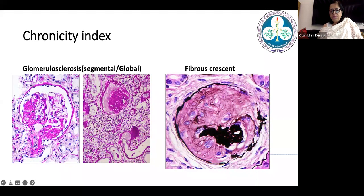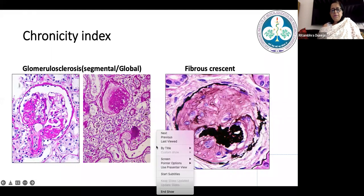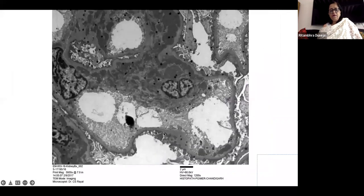Healed lesions — scarred necrosis and fibrous crescents — are taken as part of chronicity. A fibrous crescent must be differentiated from intraglomerular fibrosis: a fibrous crescent generally dissects the glomerulus, with part of it entrapped between the scarring lesion, whereas arterionephrosclerotic intraglomerular fibrosis surrounds and chokes it from all sides without dissecting it. This distinction is important when assessing biopsies for fibrous crescents.